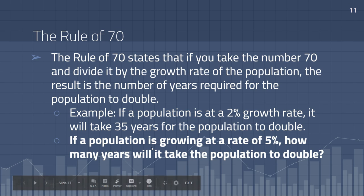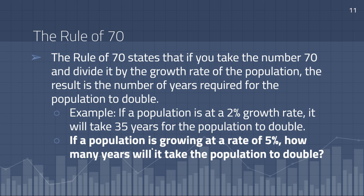One other thing to be aware of when studying human population is the rule of 70. The rule of 70 states that if you take the number 70 and divide it by the growth rate of the population, the result is the number of years required for the population to double. For example, if a population is at a 2% growth rate, it will take 35 years to double. Even though 2% seems modest, when looking at a massive population, that can represent tremendous growth over time.